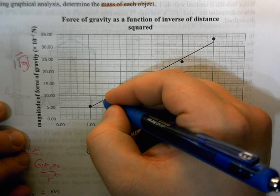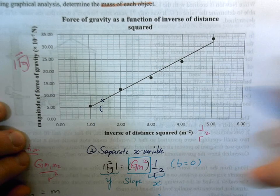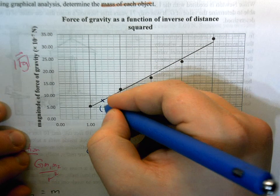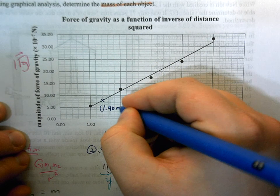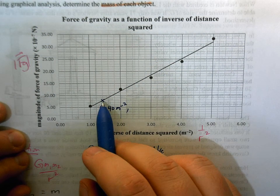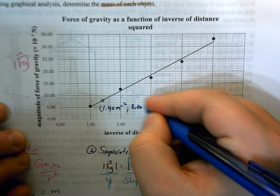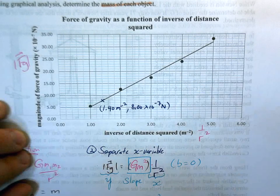I think this point, it's pretty close to something I can identify. So I'm going to say that this is the point 1.40 meters to the minus 2 and this is 8.00 times 10 to the minus 7 newtons.